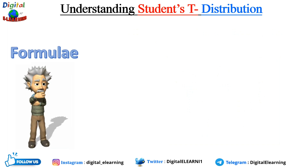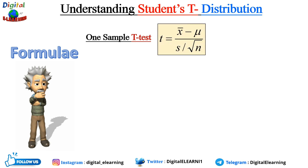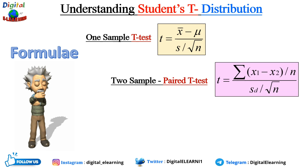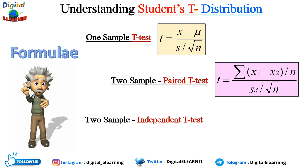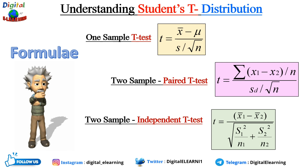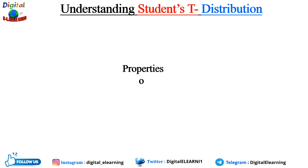Let us see some formulas used in the numerical examples. For the one-sample t-test, there is a specific formula. For the two-sample paired t-test, there is another formula, and for the two-sample independent t-test, there is yet another formula. We will use these in a couple of examples to show how t-tests are applied numerically.